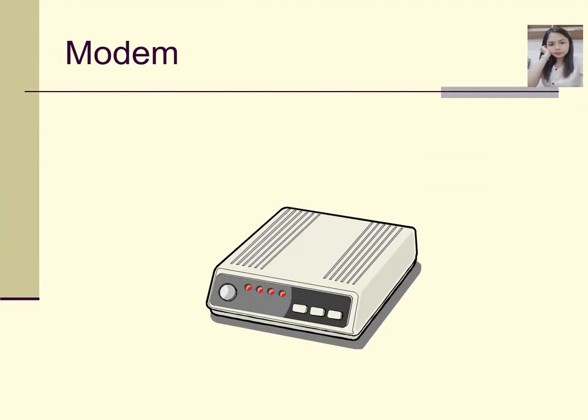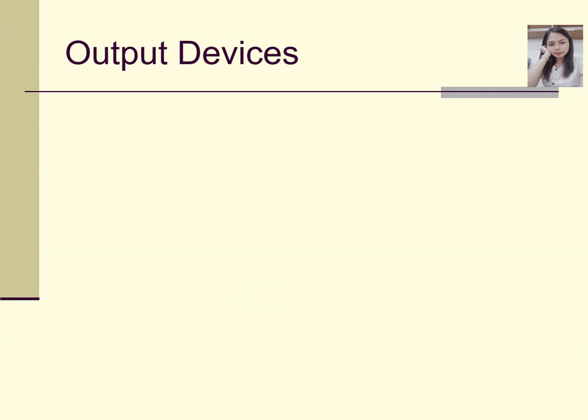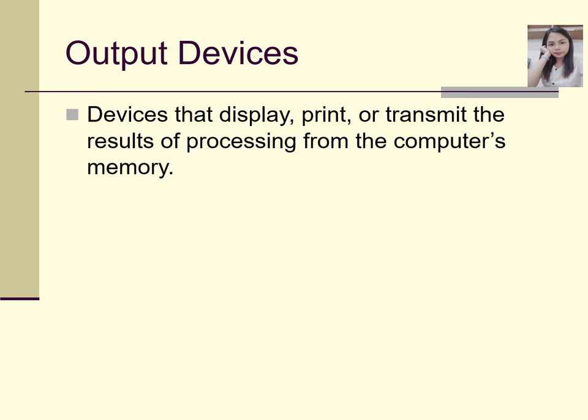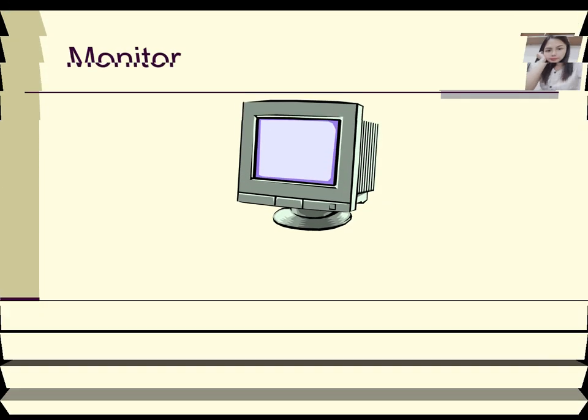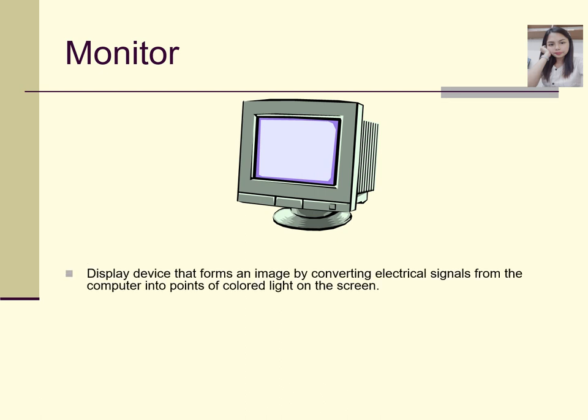A modem is an input device — a device that sends and receives data to and from computers over telephone lines. Output devices are devices that display, print, or transmit the results of processing from the computer's memory. For example, the monitor — because while you input, you can see your work on the monitor. The monitor is a display device that forms an image by converting electrical signals from the computer into points of colored light on the screen.